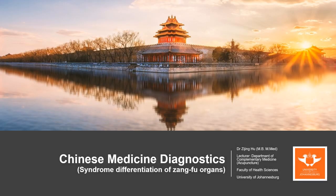Good day class. In this video we are going to talk about the syndrome differentiation of Zangfu organs. This is one of the most important differentiation methods in diagnostics. This differentiation method originates from the Huangdi Neijing, and after hundreds of years of development, it has gradually become a very important diagnostic method in our theory.